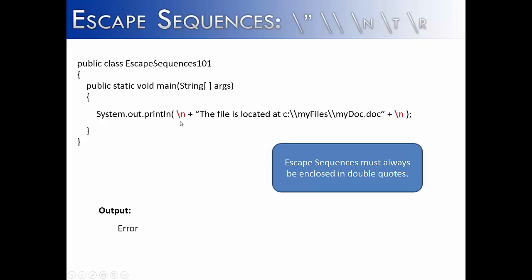We're trying to say I want an empty line before and an empty line after this sentence. But because it's not part of the quotes it would produce an error. We've remedied this by putting the backslash n inside of quotes in this system out print line statement. So when we print it out we would get an empty line. The file is located at c colon blah blah blah and an empty line afterwards. And the empty lines are created by the backslash n and the other backslash n.